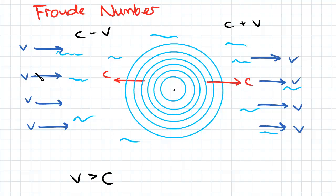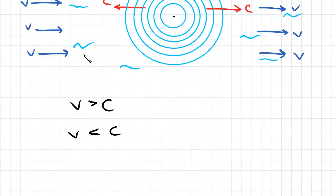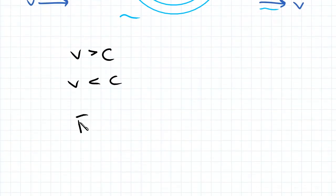Now we need to relate this information with the Froude number, which we defined in a previous video as Fr equals v over square root gy.